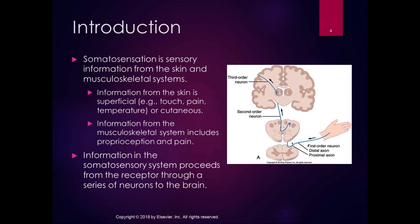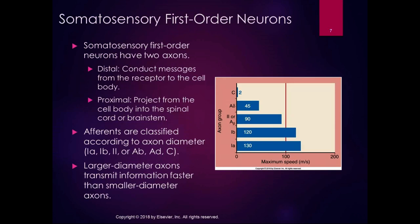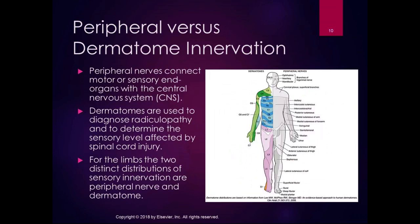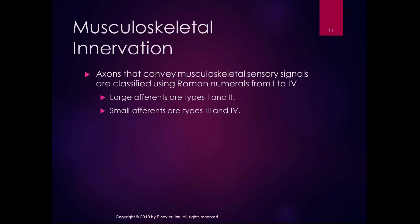We talked about the sensory receptors and cutaneous innervation. The second type of sensory innervation is musculoskeletal innervation. Just like cutaneous innervation tells us about touch, pressure, and stretch, the axons that convey musculoskeletal sensory signals tell us about the length of muscles. They are classified using Roman numerals from 1 to 4. The large ones are types 1 and 2, and the small ones are types 3 and 4.